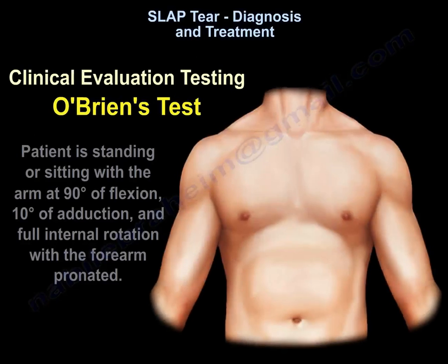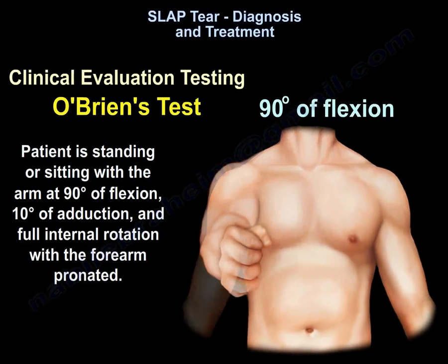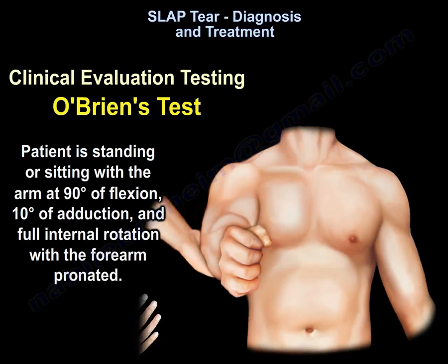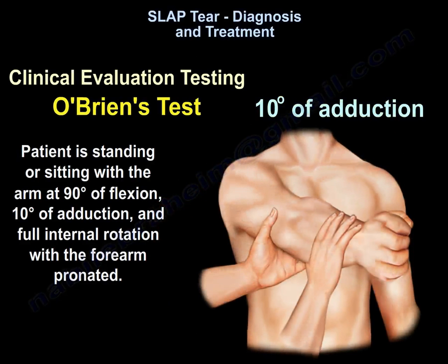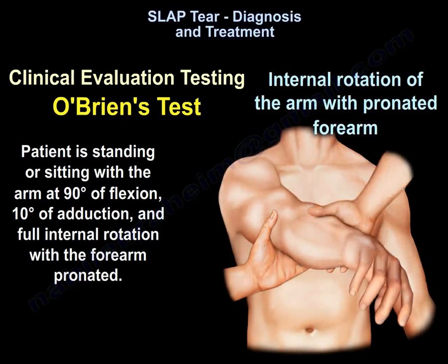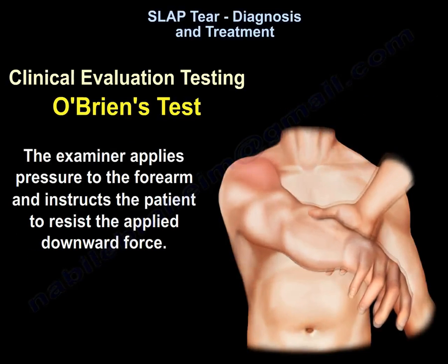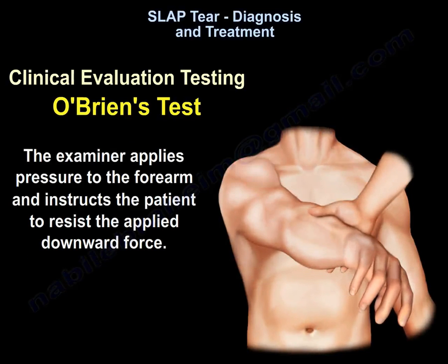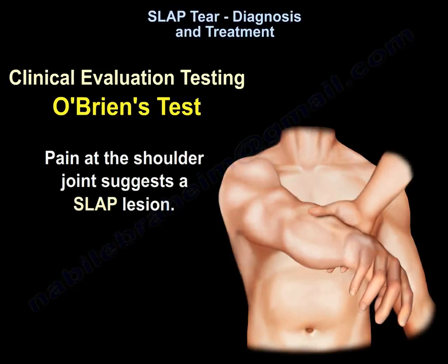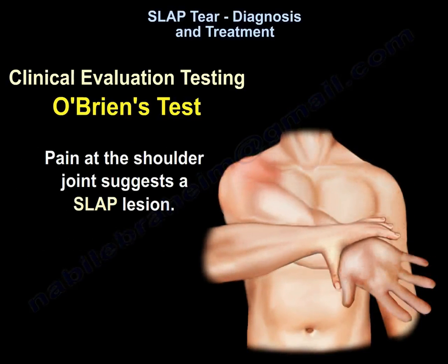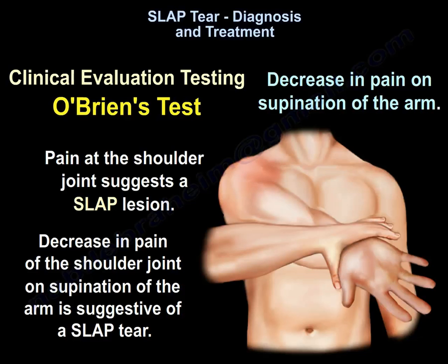To perform the O'Brien test, the patient is standing or sitting with the arm at 90 degrees of flexion and 10 degrees of adduction and full internal rotation with the forearm pronated. The examiner applies pressure to the forearm and instructs the patient to resist the applied downward force. Pain at the shoulder joint suggests a SLAP lesion. A decrease in pain at the shoulder joint on supination of the arm is suggestive of a SLAP tear.